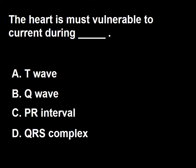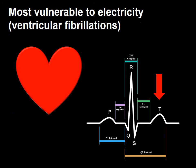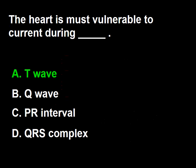Next question: what is the resistance from the tip of a central catheter with an internal guide wire to the heart? A: 10 million ohms, B: 300 ohms, C: 2,000 ohms, D: 70 ohms. The resistance from the tip of a central catheter to the heart is about 70 ohms. So the answer is D. Next question: the heart is most vulnerable to current during which part of the cardiac cycle? A: T wave, B: Q wave, C: PR interval, D: QRS complex. The heart is most vulnerable during the T wave, so the answer is A.